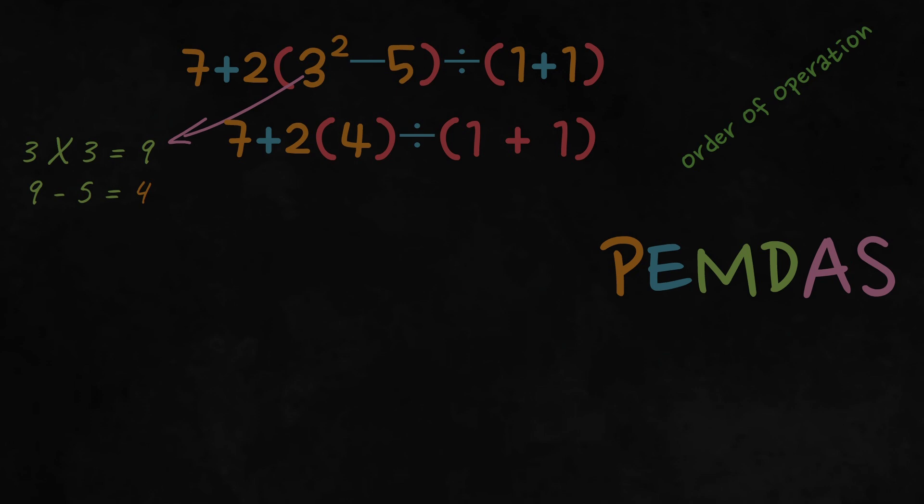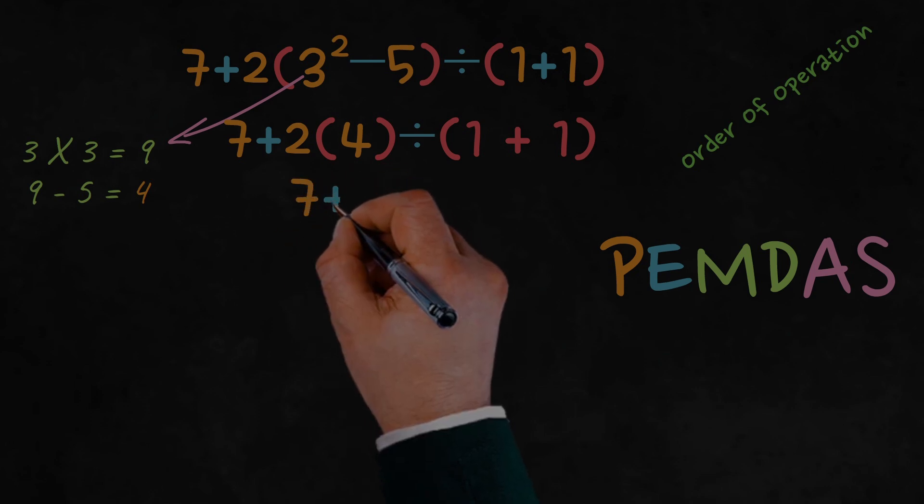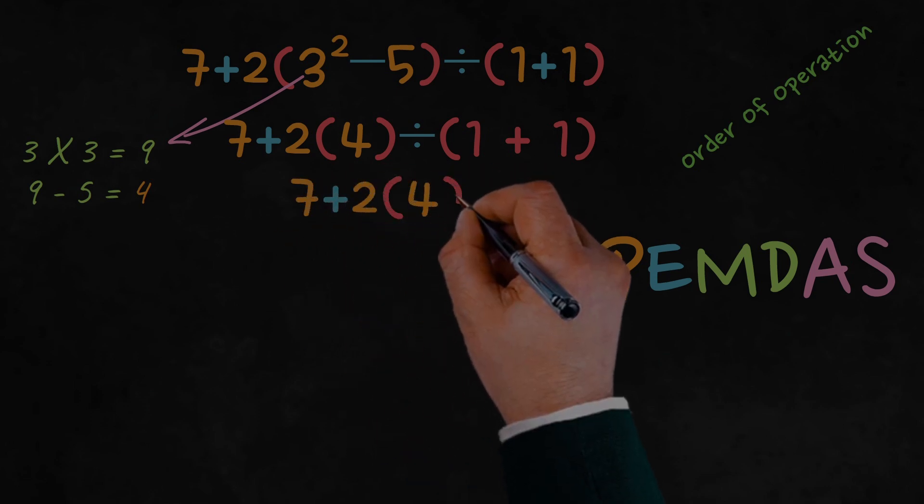Next, let's simplify the denominator, 1 plus 1, which equals 2. Now, we can rewrite our expression as 7 plus 2 times 4, divided by 2.